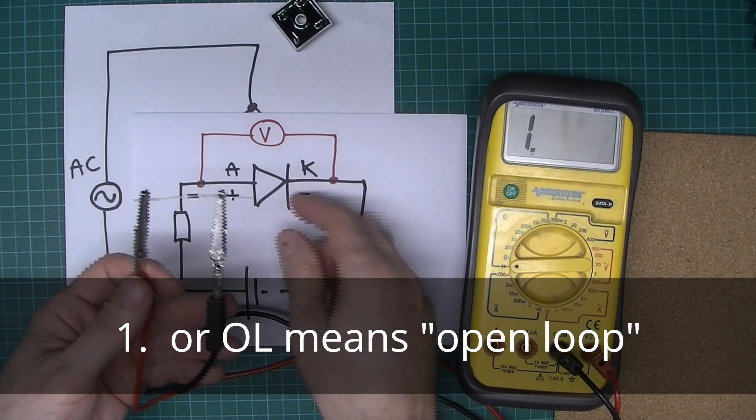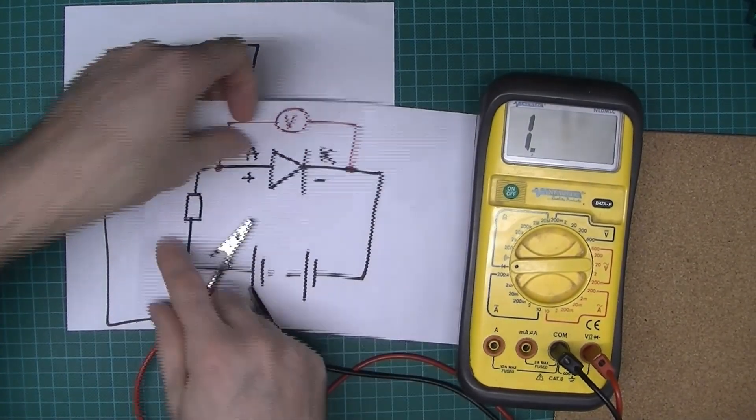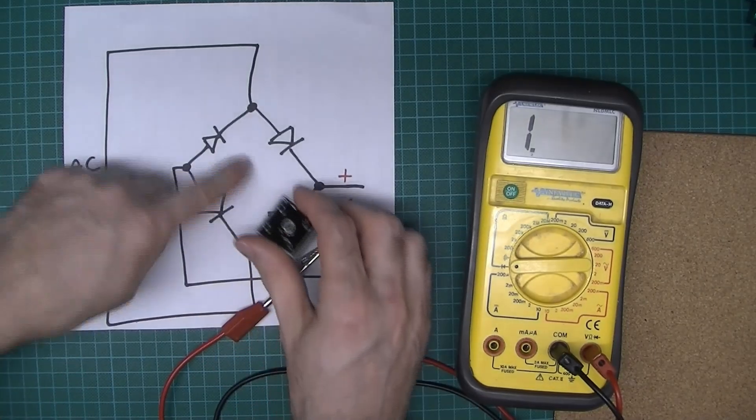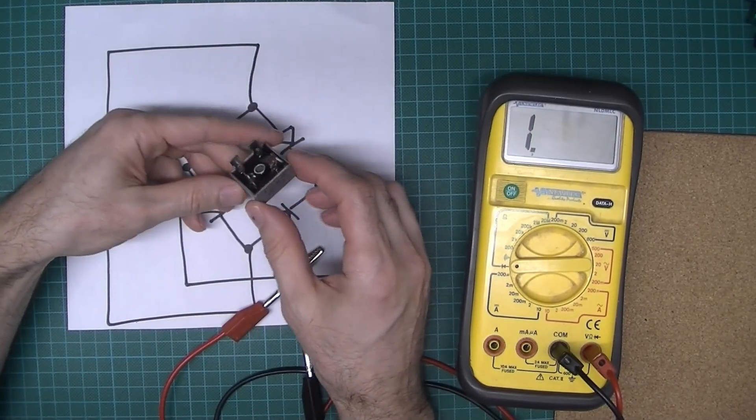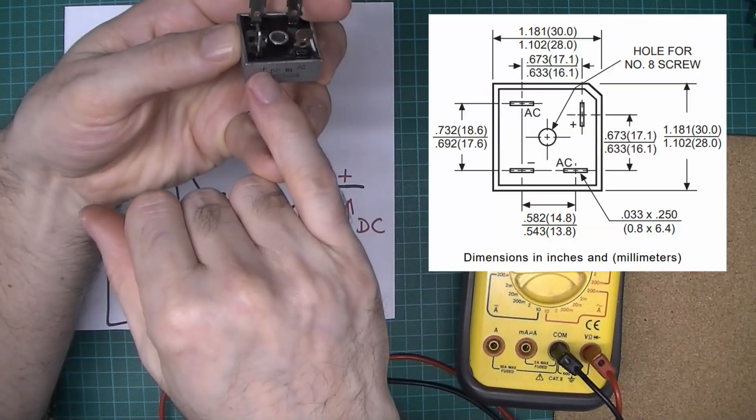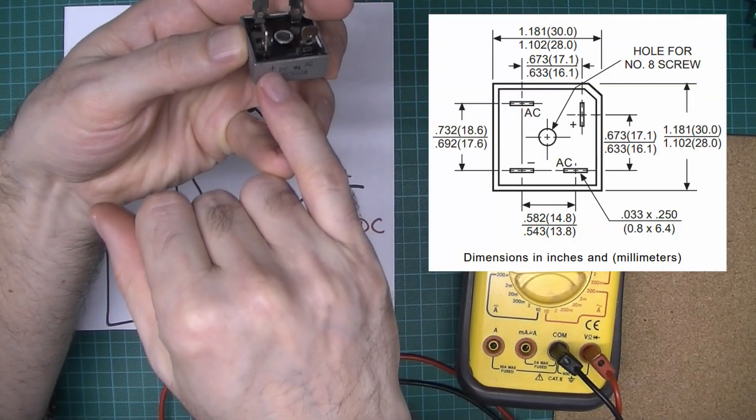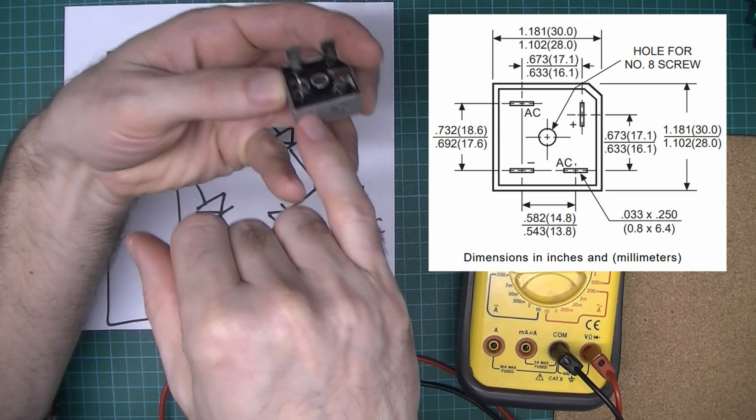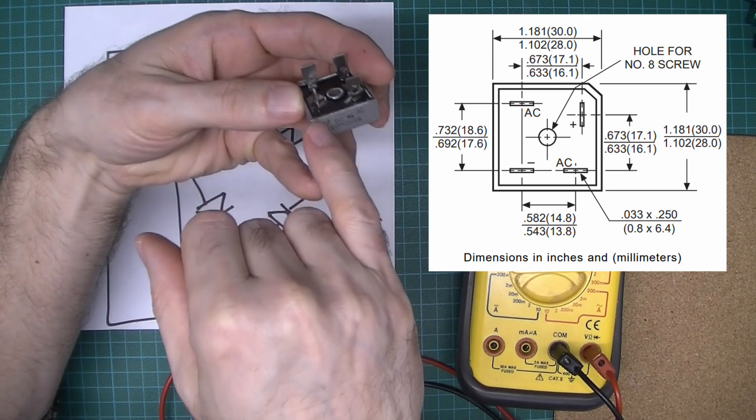But if you've got something like this bridge rectifier, that's basically just four diodes in a single package. If you have a look, I mean you could check the datasheet, but this one says the DC output or the rectified supply is on that pin there, that lug there. So that's the positive one.